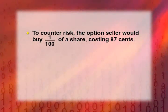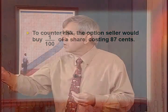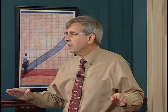The answer is very simple. If you buy one one-hundredth of a share of the stock today, then if the stock goes up to $100, one one-hundredth of that stock is worth a dollar. So you can do something today that gets rid of the risk entirely. The rational price for the option is 87 cents — one one-hundredth of the price of one share of stock.